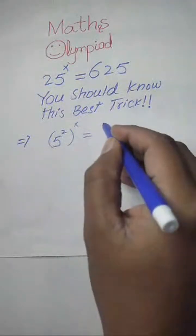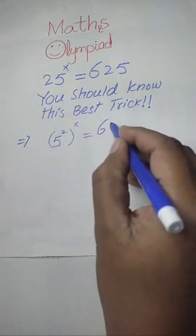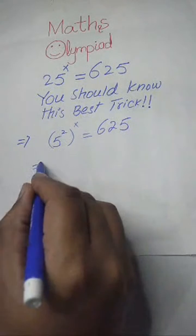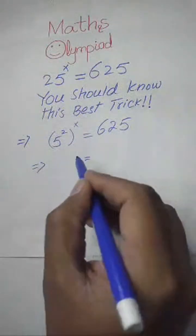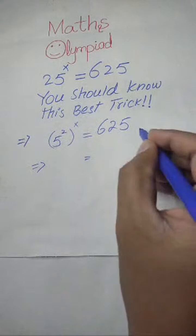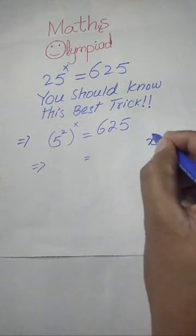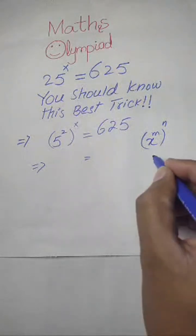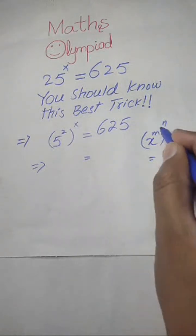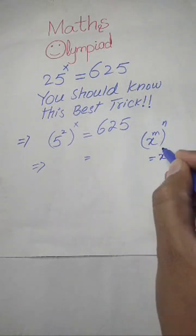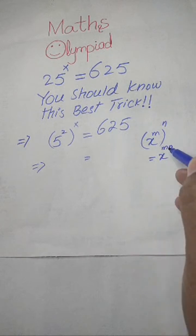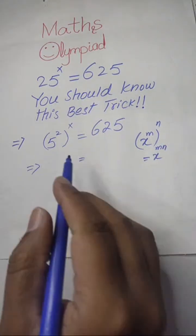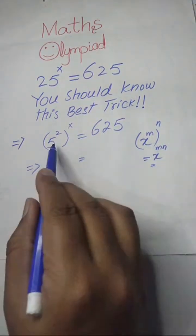After that, we will apply the exponent law. We know that if we have some exponent to the exponent, then these exponents are multiplied by each other and it will become x to the power of mn. So we apply this exponent law on the left-hand side.